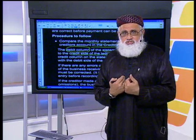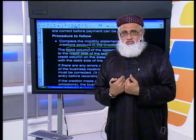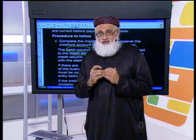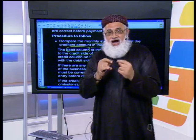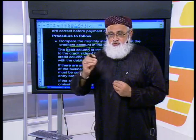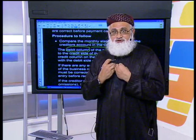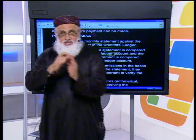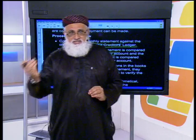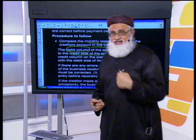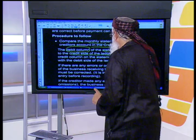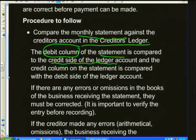Why? In our books, when the person we owe money to — that's why it's called a creditor — sends you a statement, to that person you are a debtor. You owe money to somebody because you've purchased goods from that person — that person is your creditor. But from that person's perspective, they would say you owe money to us. So it's our creditor because we owe money to them, but from their perspective these are their debtors. That is why the debit column of the statement is compared to the credit side of the ledger account, and vice versa.